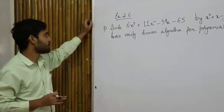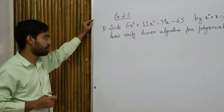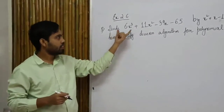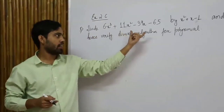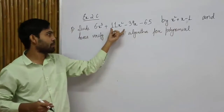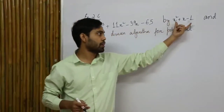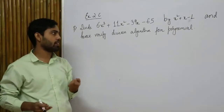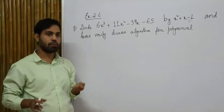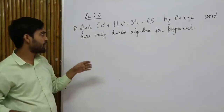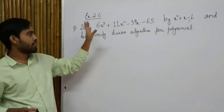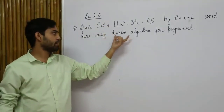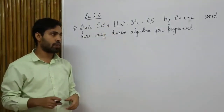This question is taken from exercise 2C. The question asks me to divide one polynomial by another polynomial, and then after the division, verify the division algorithm for polynomials. So there are two parts: first do the division, then verify the algorithm.